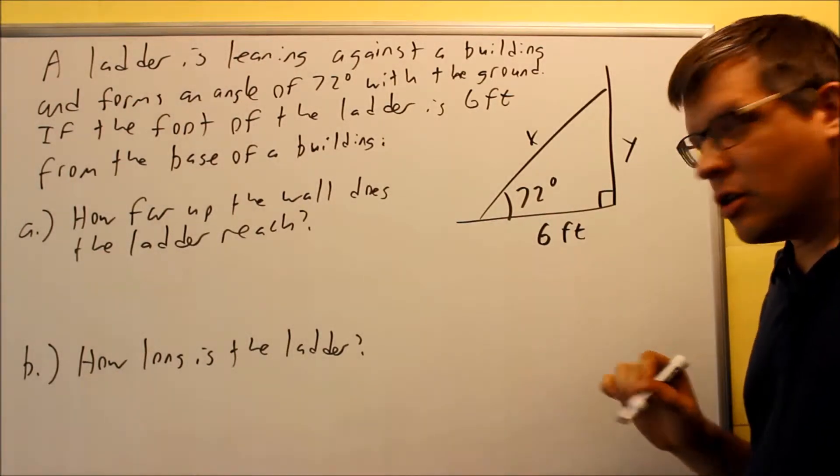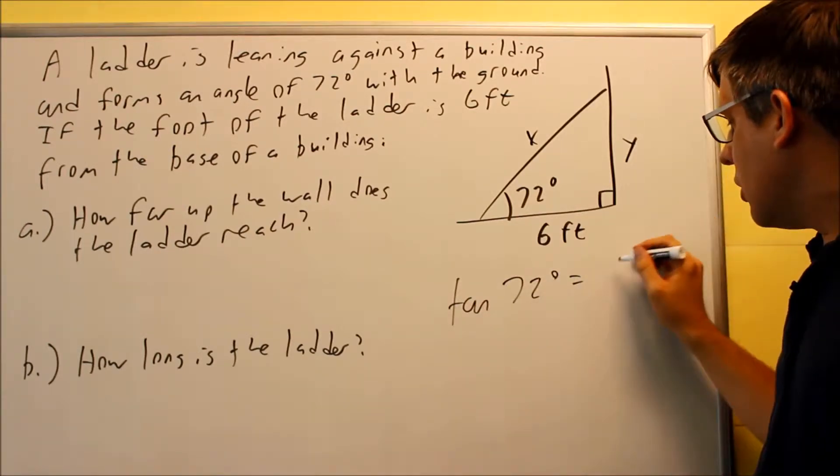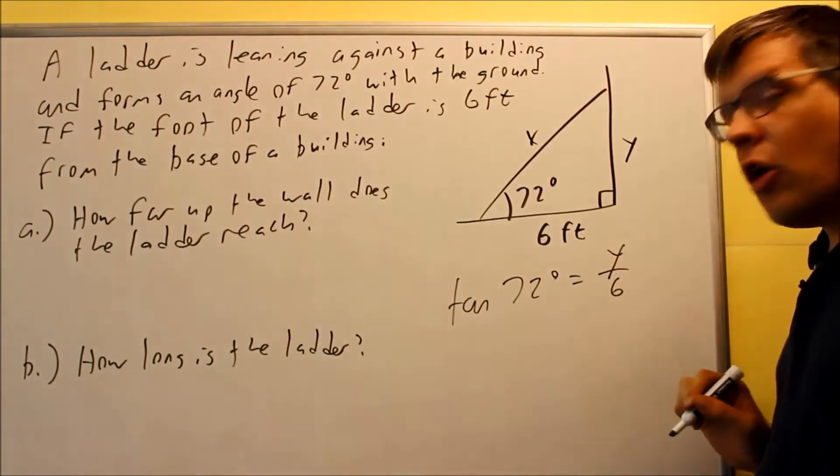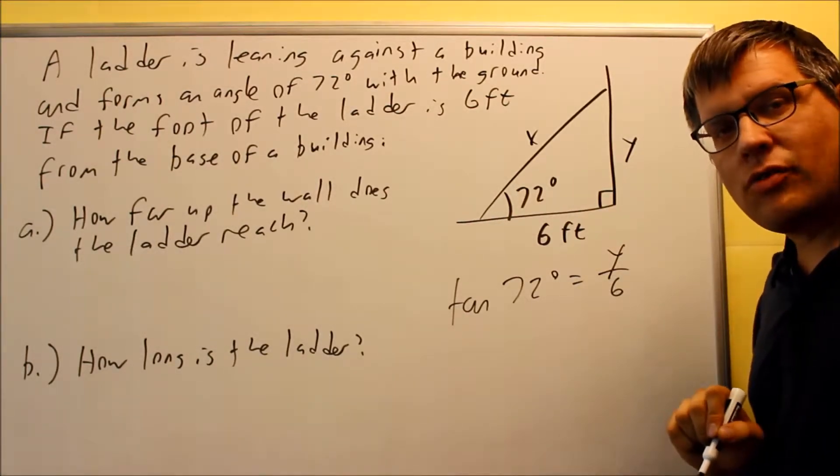So relating this would be 72 degrees, the Y would be our opposite side and six would be our adjacent side. So we want to use tangent here in this case. So I'm going to do tangent 72 degrees is equal to the Y value over six, opposite over adjacent, using that definition for tangent.